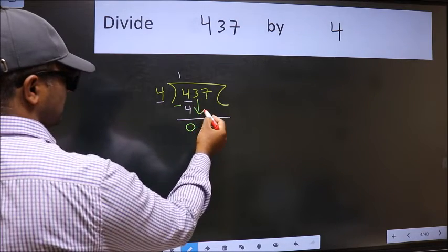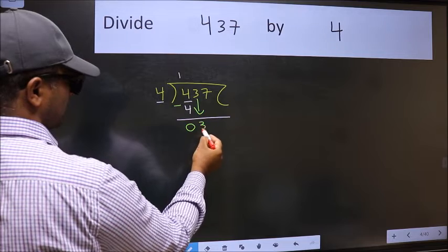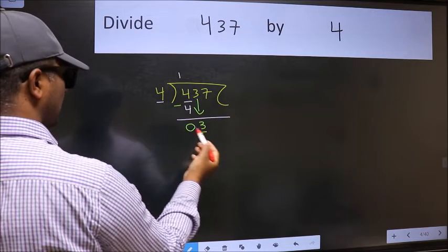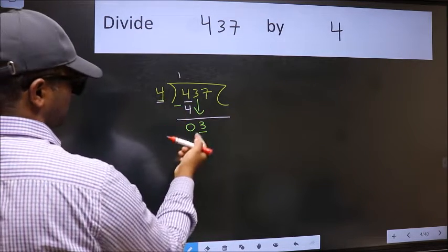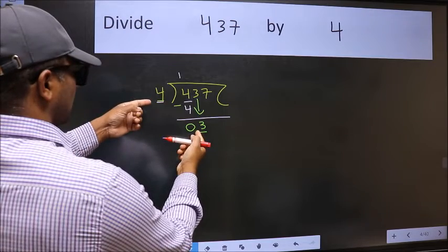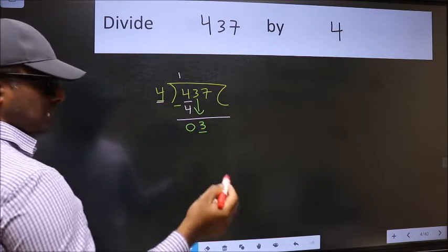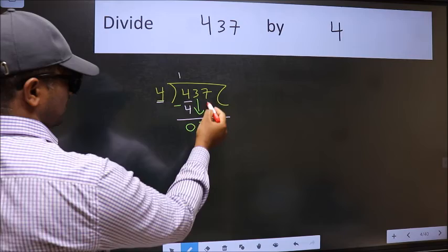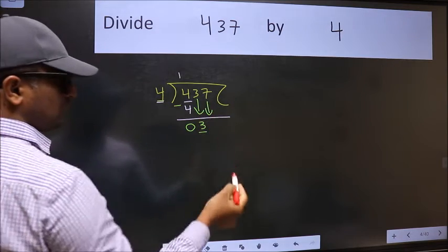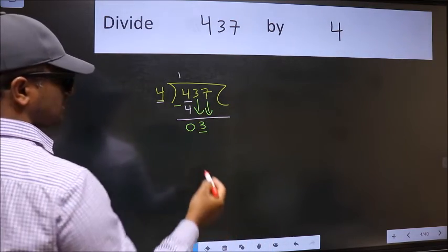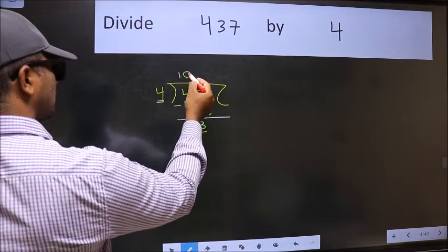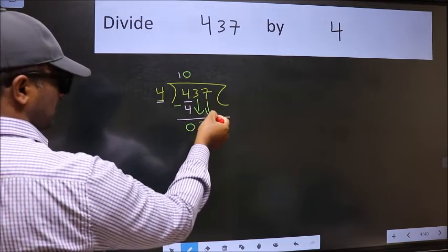After this, bring down the beside number. So, 3 down. Now, here we have 3 and here 4. 3 is smaller than 4, so we should bring down the second number. The rule to bring down the second number is we should put 0 here. Then only we can bring this number down.